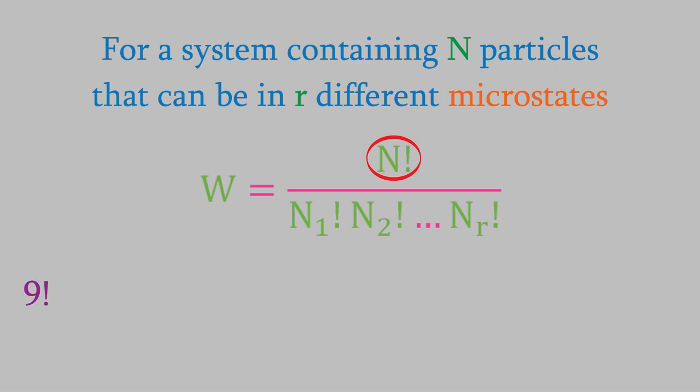and it means that we multiply the integer n by every positive integer that's smaller than it is. So, for example, 9 factorial is equal to 9 times 8 times 7, and so on, all the way down to 1. When we perform that calculation, we find that 9 factorial is equal to 362,880.